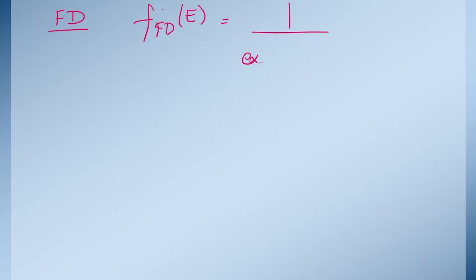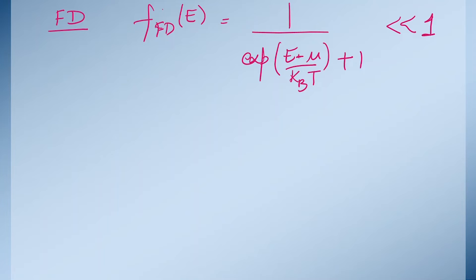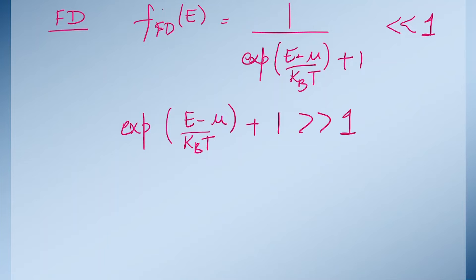Let's start to prove this. We begin with Fermi-Dirac (FD). We know the distribution function for Fermi-Dirac is: f_FD = 1 / [exp((E − mu) / k_b T) + 1]. Since f(E) is very much less than unity, the exponential term (E − mu) / k_b T must be very much greater than 1 when we take the +1 to the other side. So this whole exponential term becomes very much larger than 1.